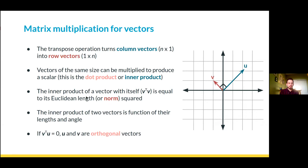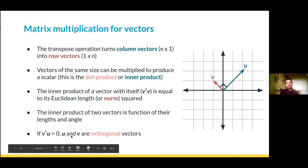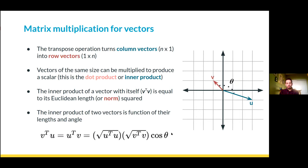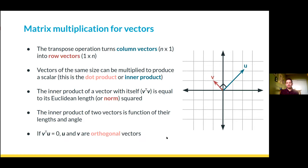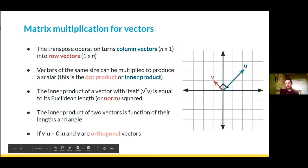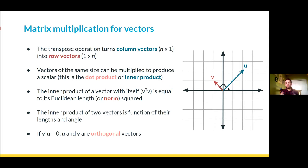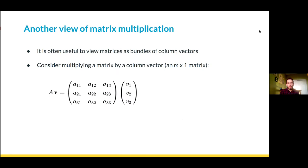If v transpose u equals zero, that can only happen for non-zero length vectors when the cosine term is zero, meaning the angle between the two vectors is 90 degrees — a right angle. This idea of orthogonality generalizes the idea of being perpendicular that you've seen in geometry class.